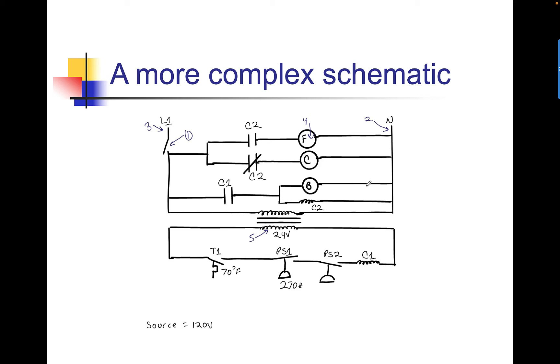This is a more complex schematic symbol. We'll work towards this. But just again, you have your switch. We have our source, L1, and neutral. We have some loads. Could be bulbs. Could be motors. Could be just about anything. I have loads. I actually have a load here. We'll talk more about this symbol. And I have a load here.